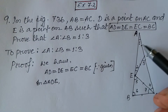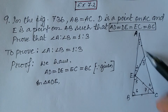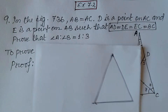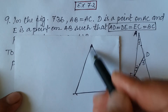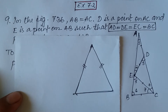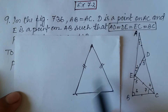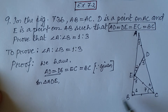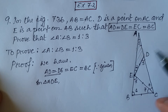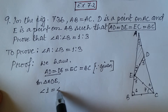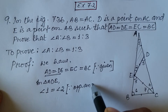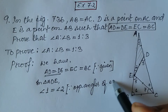Now in triangle ADE, AD is equal to DE, which is given. Since these two sides are equal, the two opposite angles are also equal — this is a property of the isosceles triangle: if two sides of a triangle are equal, then the angles opposite to those sides are also equal. So angle 1 is equal to angle 2, since opposite angles of equal sides are equal.